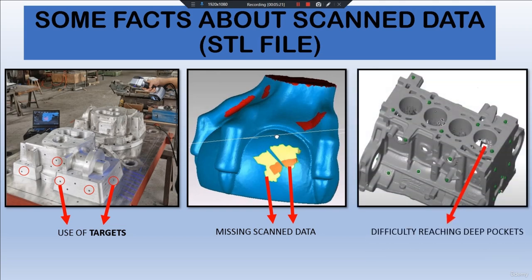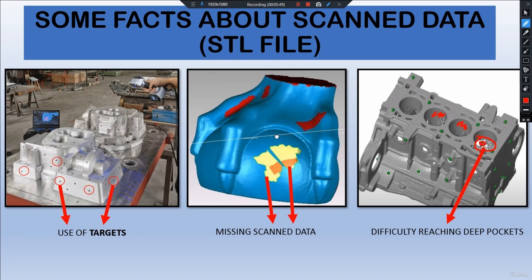Fact number three is the difficulty in reaching deep pockets. If a component is very large and has deep pockets, it is possible that the scanner cannot scan that deep area. As shown here, some scan data is fully filled but some areas are missing. This is not always a big problem, but if there are features in those areas, we need to scan them properly with more angle shots.